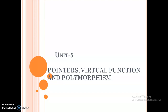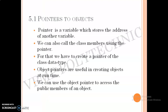Now about pointer to objects. A pointer to object is a special kind of variable which stores the address of another variable. A pointer is also a variable, but instead of a value it stores the address of another variable. We can also call class members using a pointer. To do that, we have to create a pointer of the class data type — similar to how you create a pointer of the integer data type.